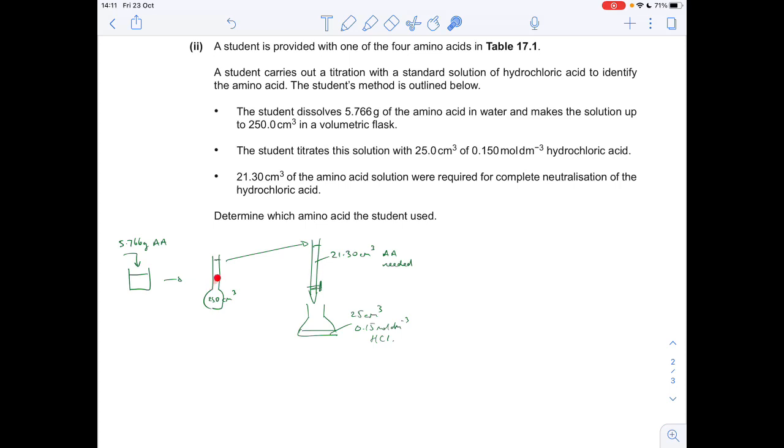Now for this titration, this solution has gone into the burette. We know that 21.3 cm cubed of the amino acid was needed to neutralize 25 cm cubed of 0.15 moles per dm cubed HCl.